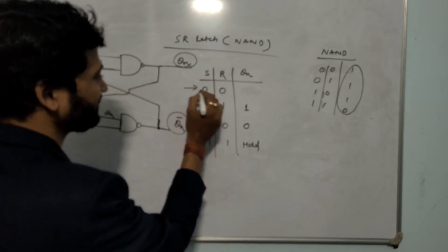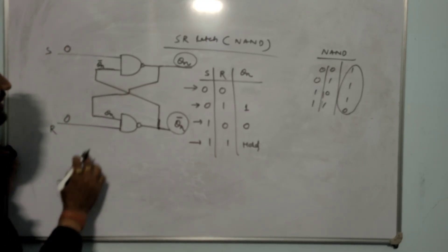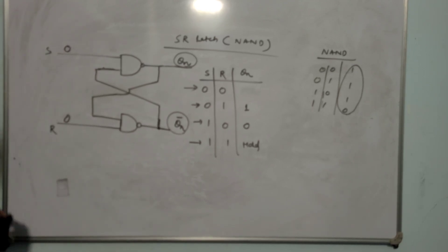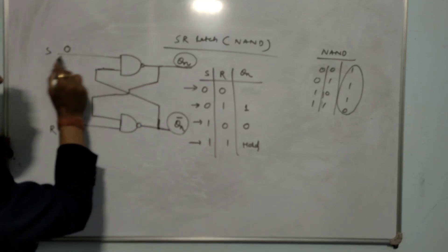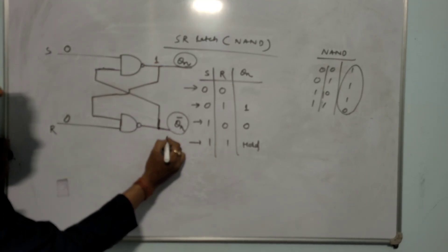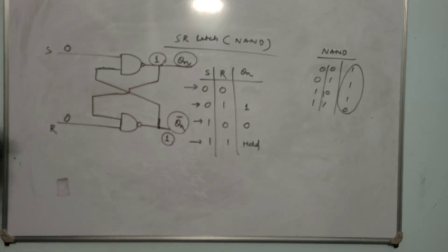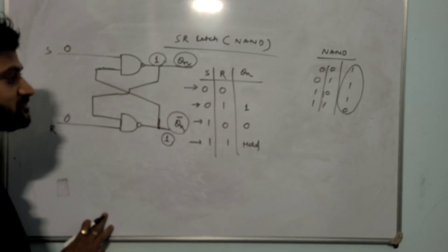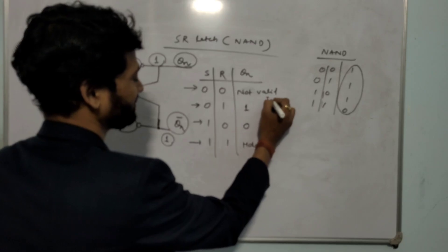Last combination is S=0, R=0. Both inputs are 0. As stated, if any one input is 0, the output is 1 — so both Qn and Qn-bar would be 1 simultaneously. That is not possible, so this state is invalid — it is called the Invalid State or Forbidden State.